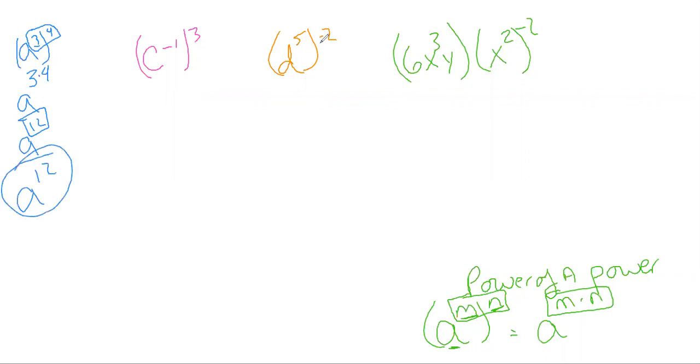After we do that, we go over to the next one. This one's gonna bring in some negative exponents, but that's perfectly fine. We know how to handle those. You'll notice that I have C to the negative one to the third power, and I have a power to a power. We just multiply. We take that negative one and multiply it by three, which means that we have C to the negative third power.